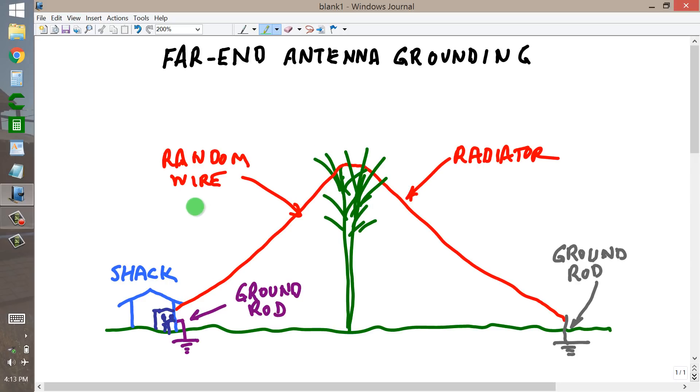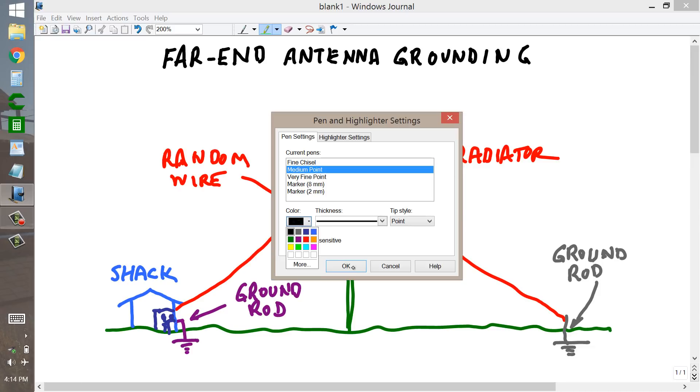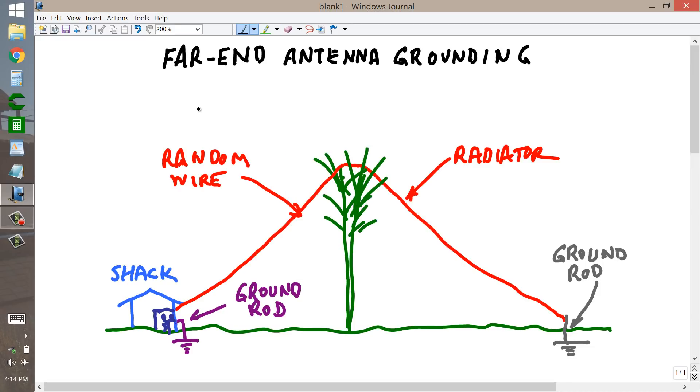But the antenna does not necessarily have to be a long wire. In fact, it can be as short as one-fourth wavelength.